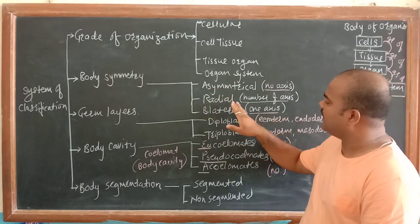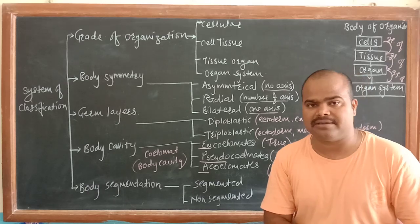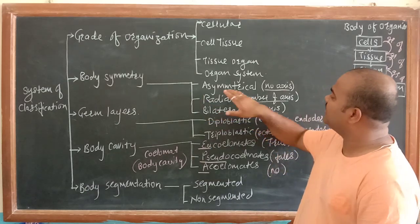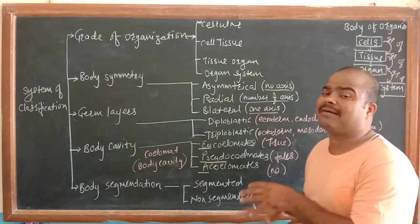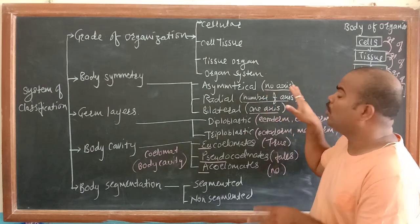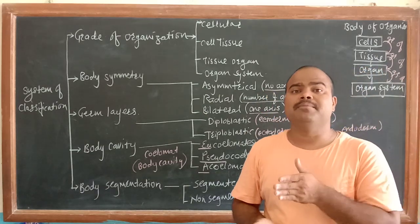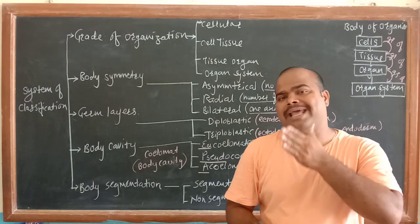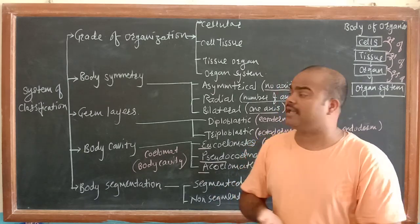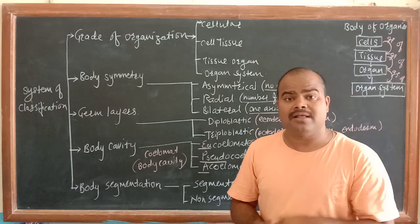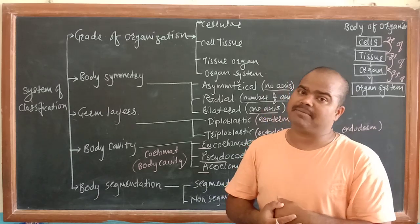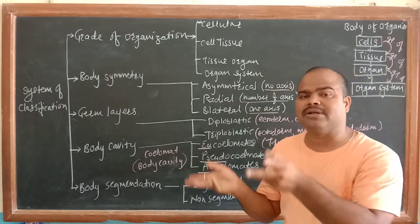First is asymmetrical, second is radial, and third is bilateral. Asymmetry means no imaginary axis of line - we cannot cut this organism exactly in half. The best example of asymmetry is amoeba. Amoeba's structure has an irregular shape.